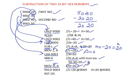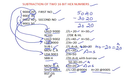Now L has the lower byte subtraction result 20 and H has the higher byte subtraction result 20. I need to store both into the specified output location. I use SHLD 9004, which stores the L and H register values into memory locations 9004 and 9005 respectively. So like that, we can perform the subtraction of two 16-bit numbers in 8085 microprocessor assembly language.